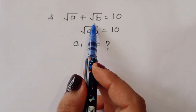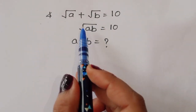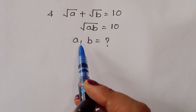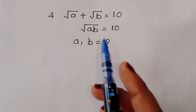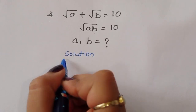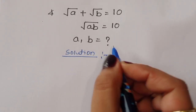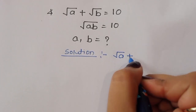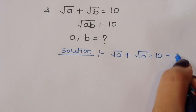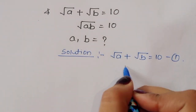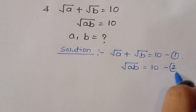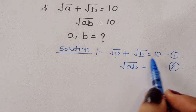The question is: given √a + √b = 10 (equation 1) and √(ab) = 10 (equation 2), we have to find out the value of a and b. Let's see the solution.